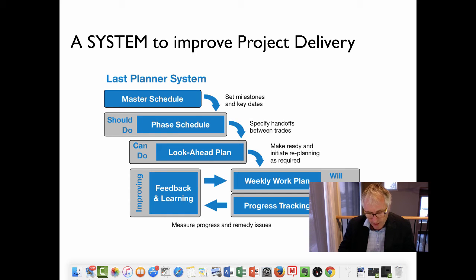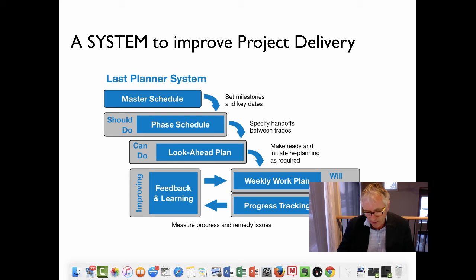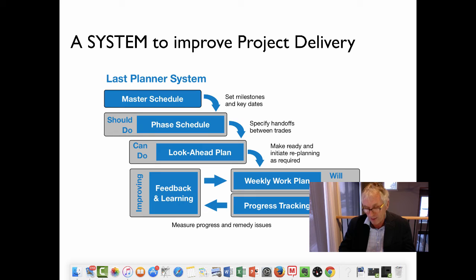The six-week look-ahead schedule is used for workflow control to meet the phase plans and ensure that there are no constraints that will affect the weekly work plan. It identifies the work that can be done by matching the workflow to capacity, maintaining a balance of work to minimize downtime and develop plans for how the work will be completed.